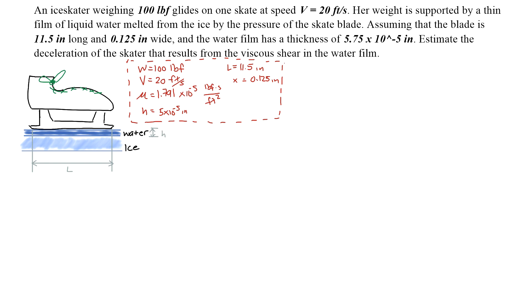In this fluid mechanics problem, an ice skater weighing 100 pounds glides on one skate at a speed of 20 feet per second. Her weight is supported by a thin film of liquid melted water from the ice by the pressure of the skate blade.